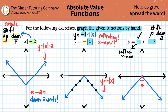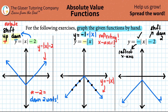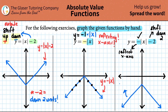Now all we have to do is shift down two units. I'll start from the origin and pull it down two numbers — the whole graph shifts down with it. Every point gets shifted down twice. Go down one, then down two — and that's it! This is y equals negative times the absolute value of x minus two. It all stems from the absolute value V shape, and then you apply all your transformations.